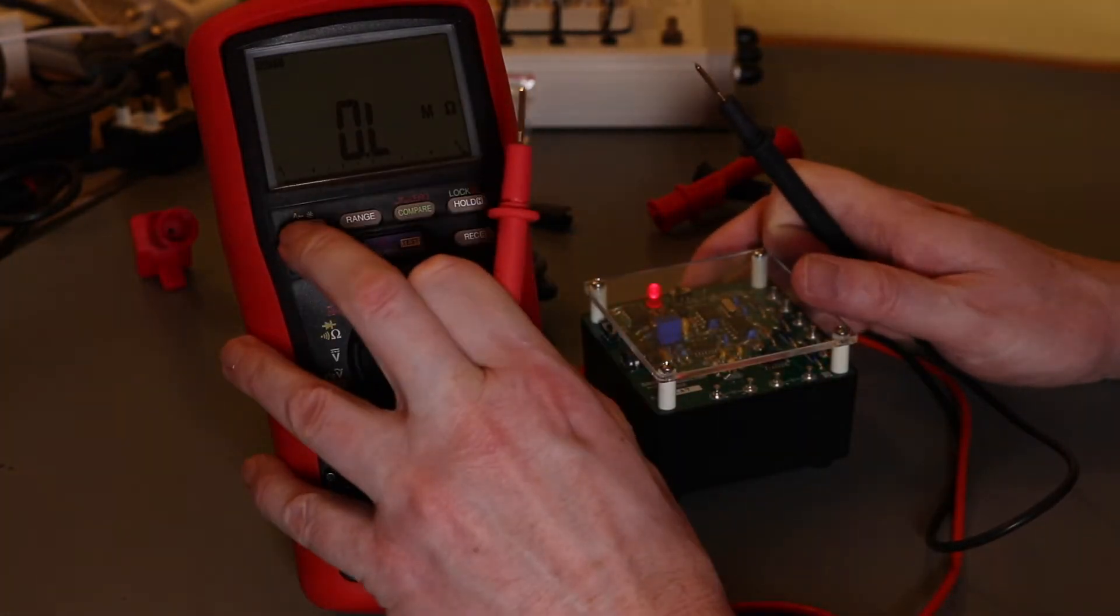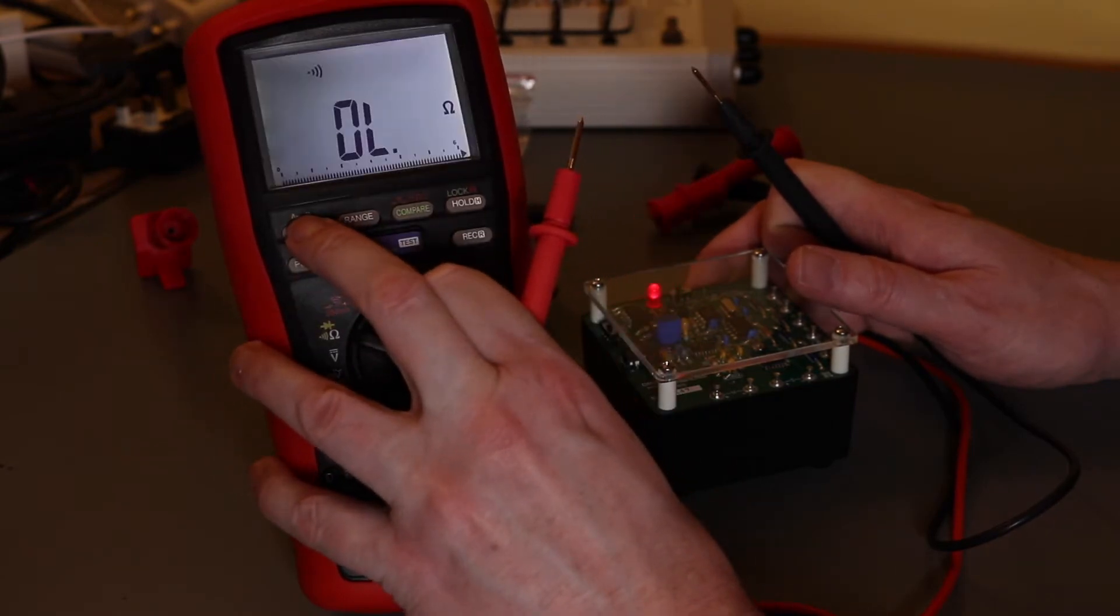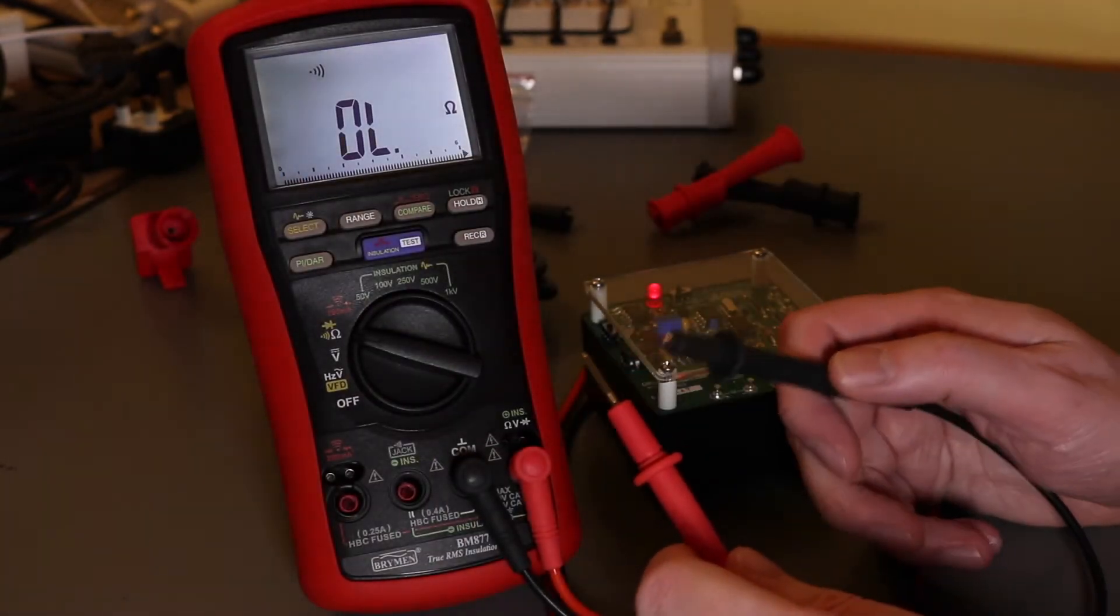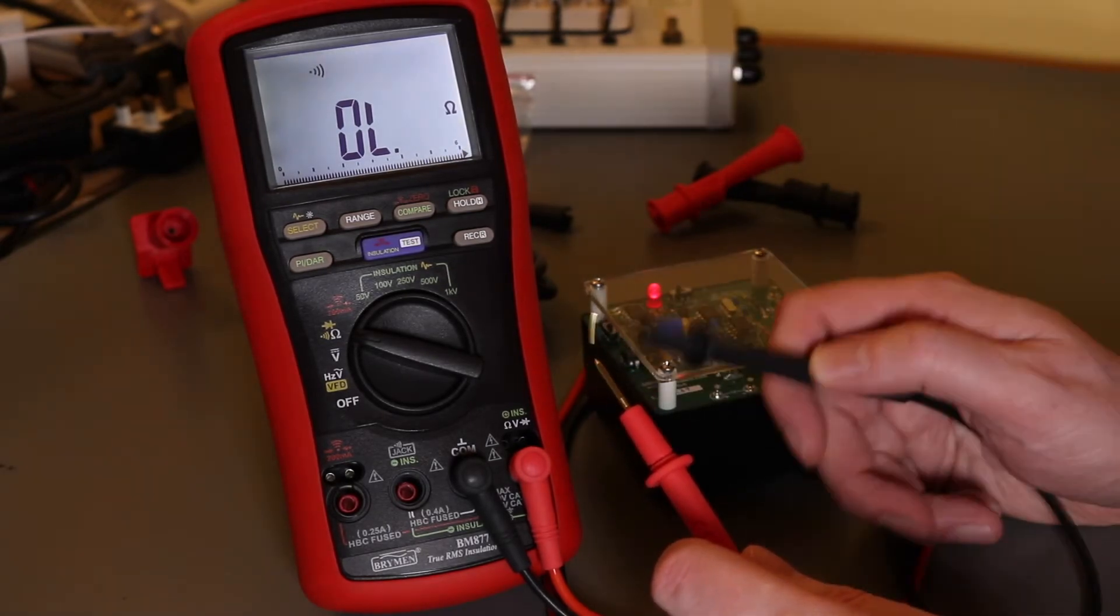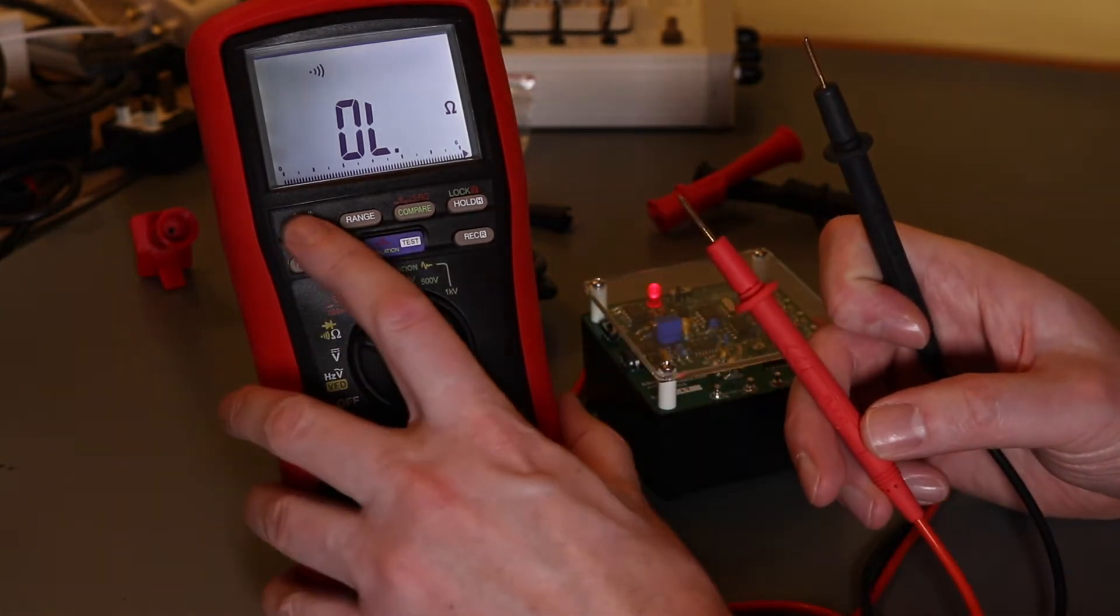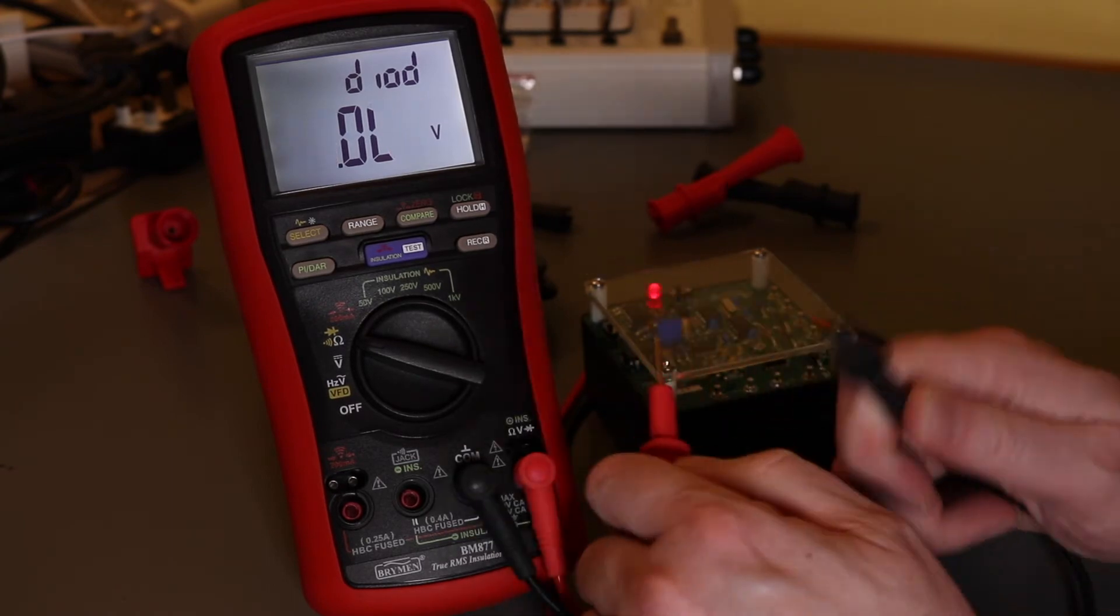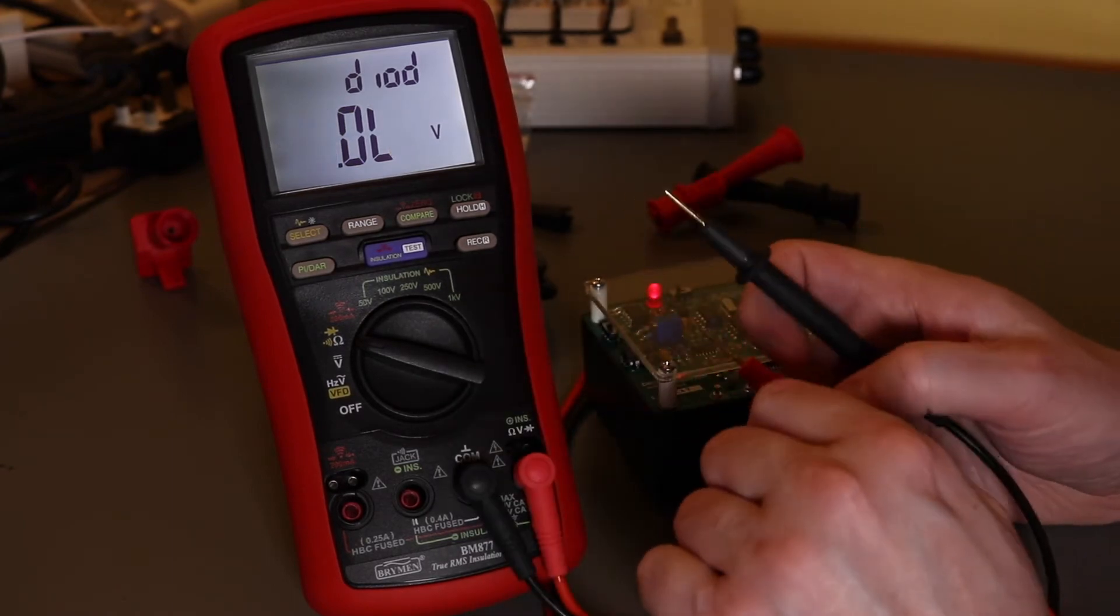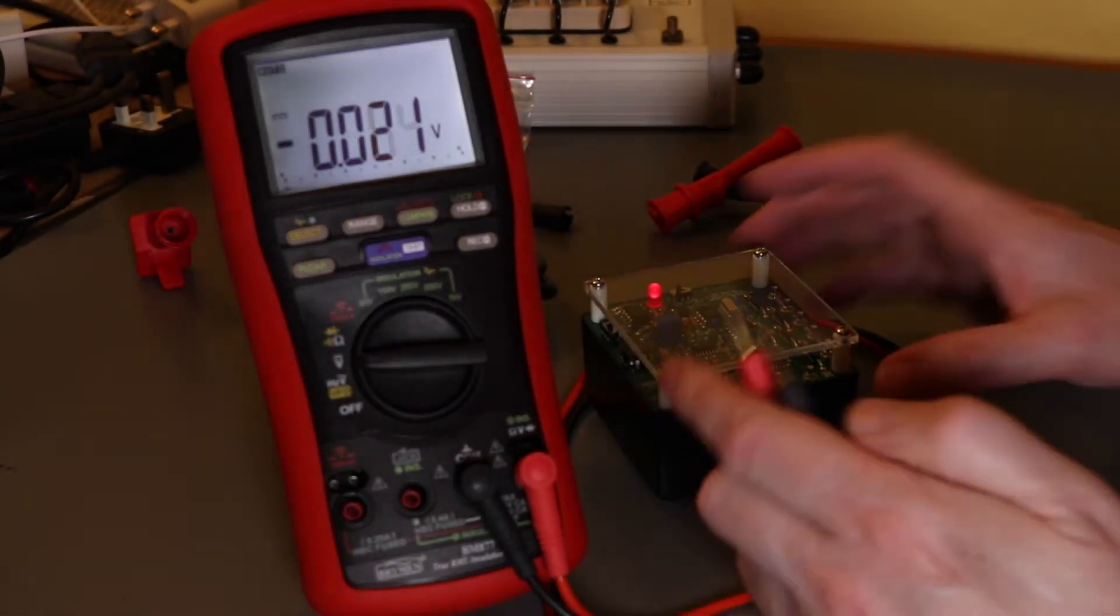One press of the select button takes me to continuity. There you can see, pretty good, not too bad on the continuity. And then the final one gives me the diode. No beeping on the diode. They spell diode without the E, but never mind. So if we switch back to DCV.